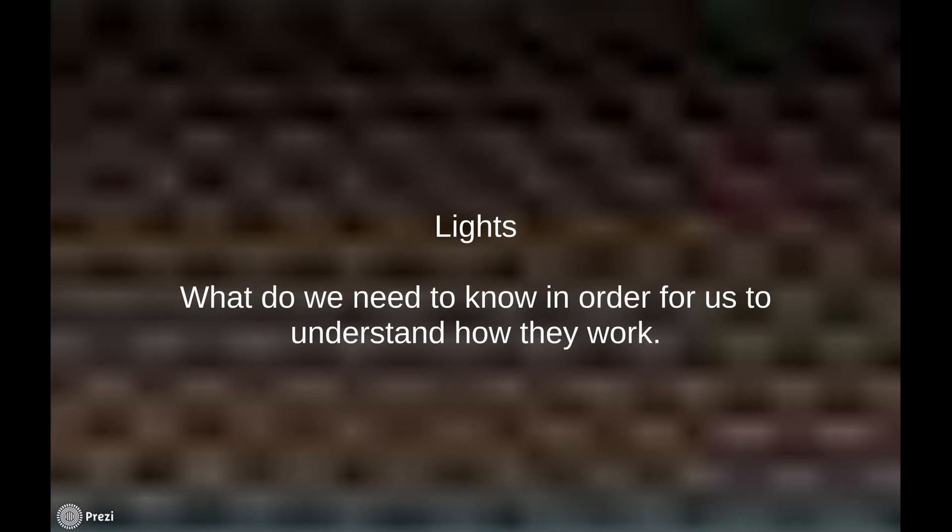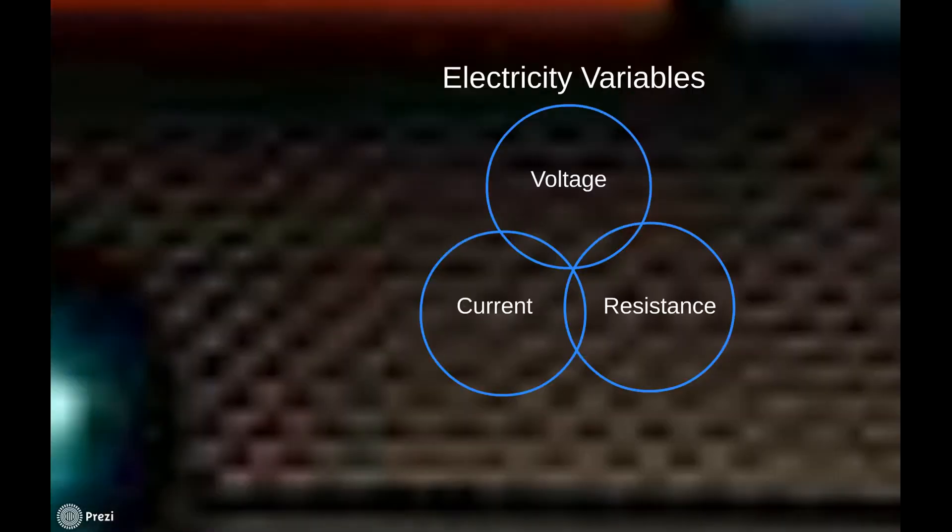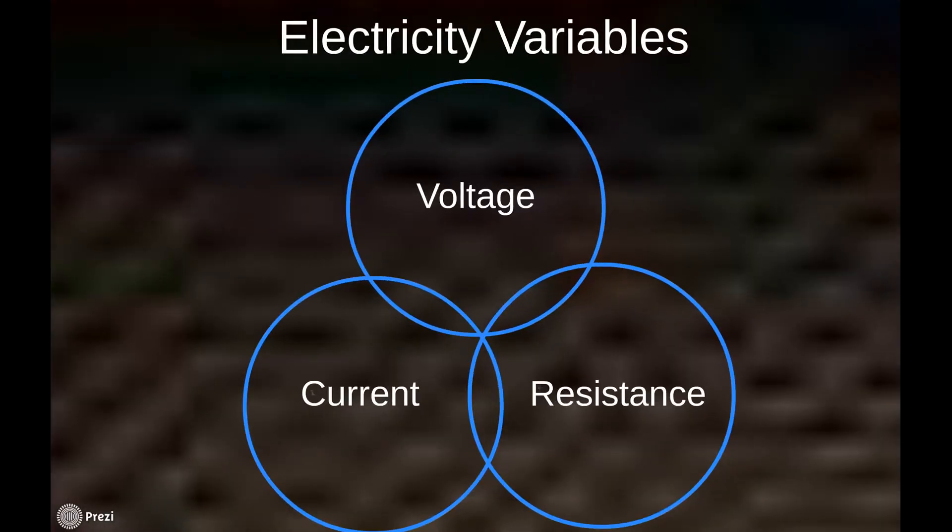In order to understand how lights work, what do we need to know? Well, there's always these electricity variables. We have three of them: we have voltage, we have current, and we have resistance. The three of those are critical to understand exactly how lights light up and how we can do work with lights.